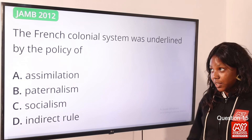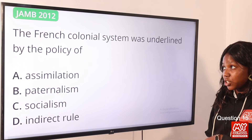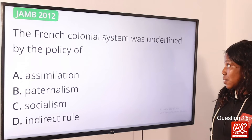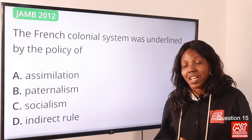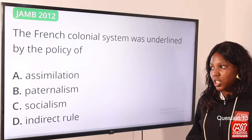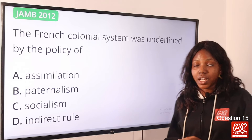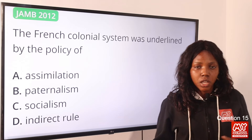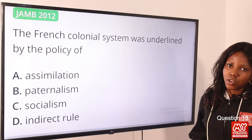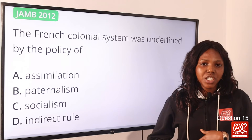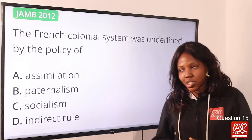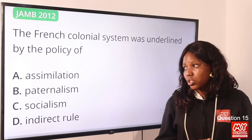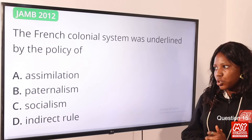Question 15: The French colonial system was underlined by the policy of — the answer is option A, assimilation. The French adopted the policy of assimilation while the British adopted the indirect rule policy. The answer remains option A, assimilation.